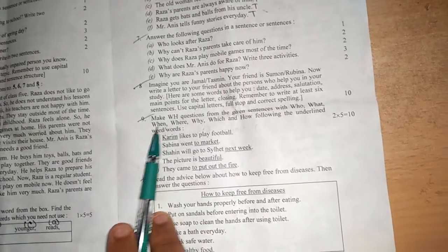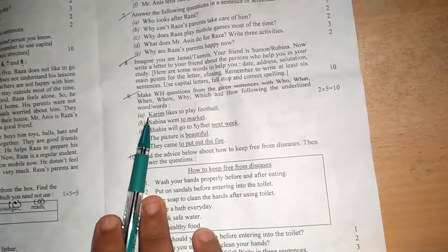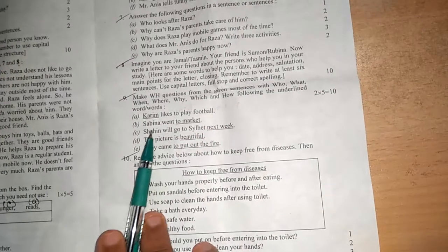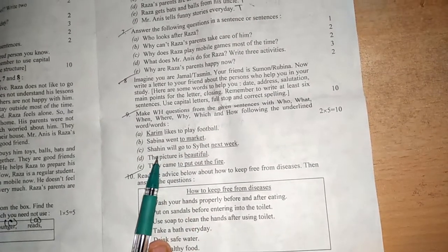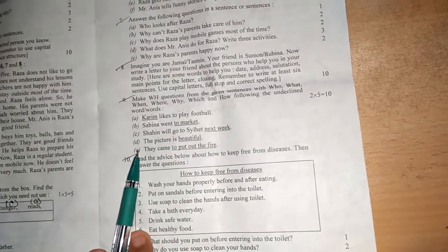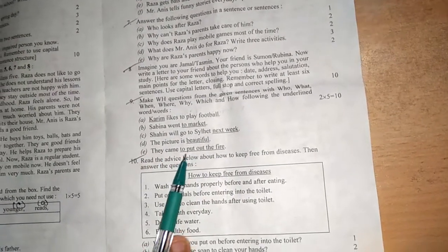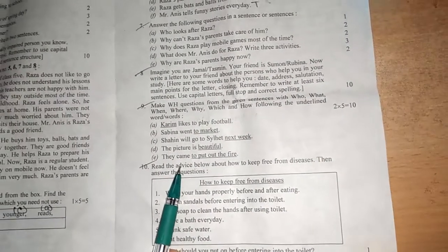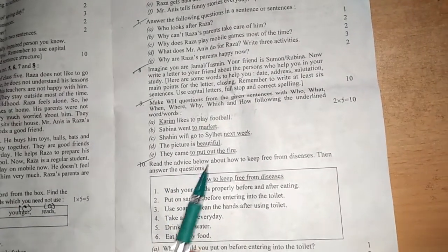Now in number nine, double-edged question. Now in number nine: Corim likes to play football. Number B, Sabina went to market. Number C, Shaheen will go to Sealake next week. Number D, the picture is beautiful. Number E, they came to put out fire.